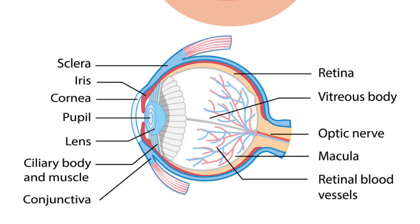The lens is a transparent structure located behind the iris that helps to focus light onto the retina.